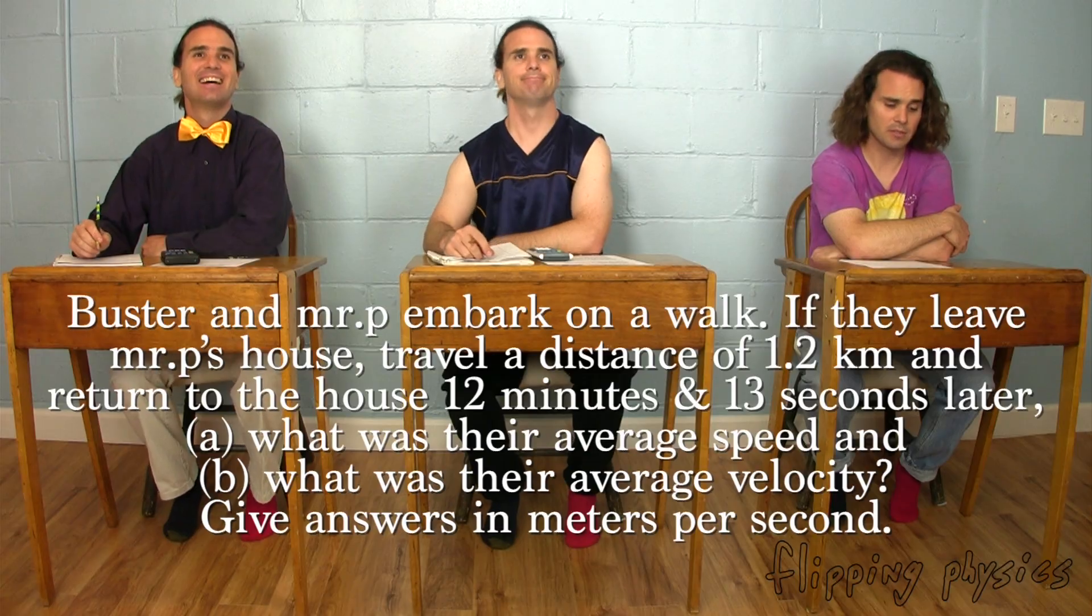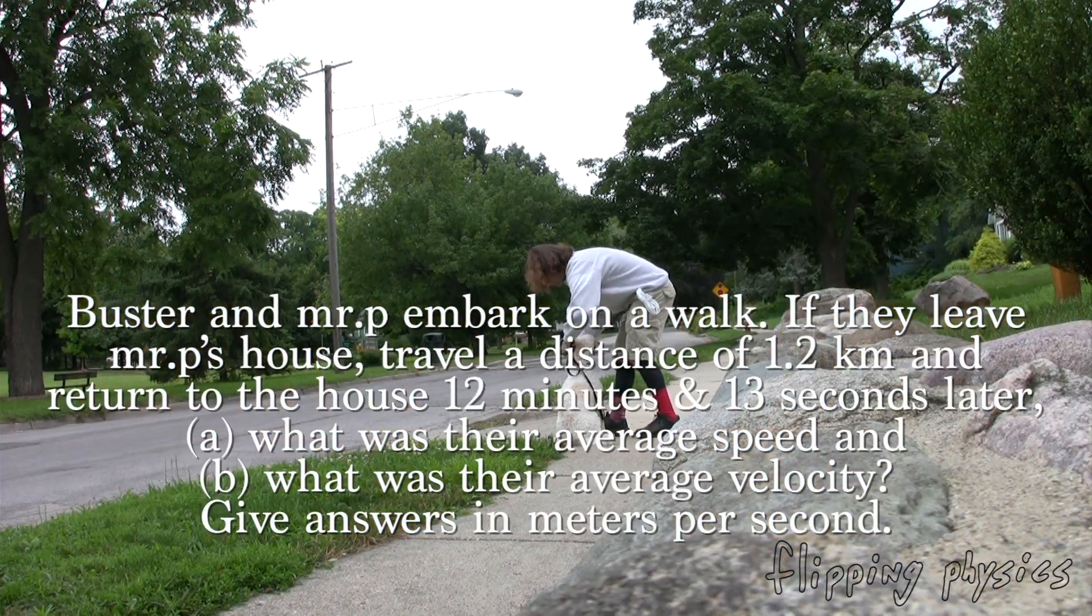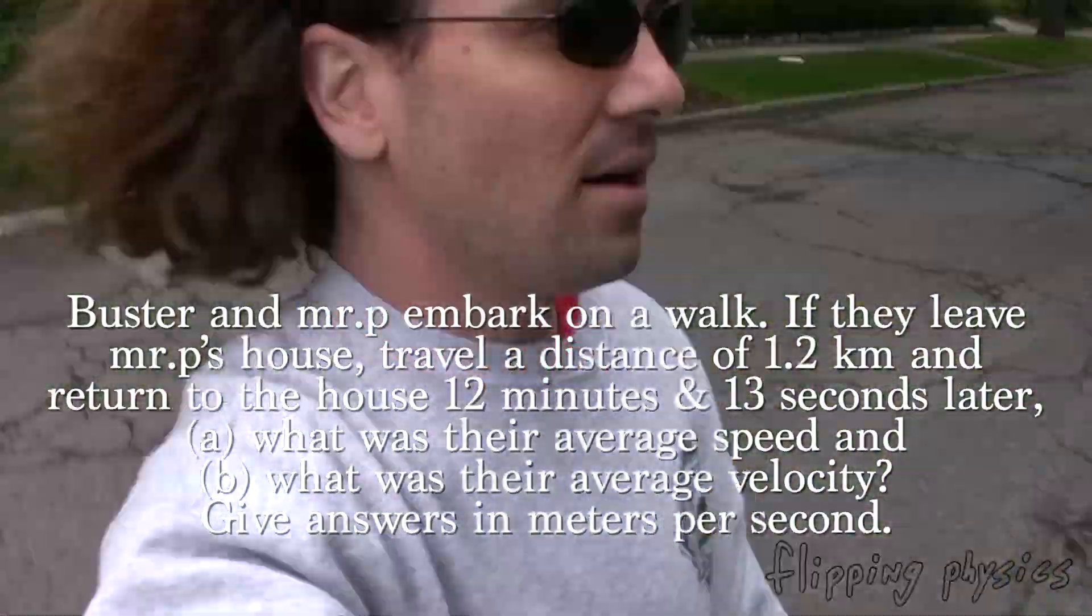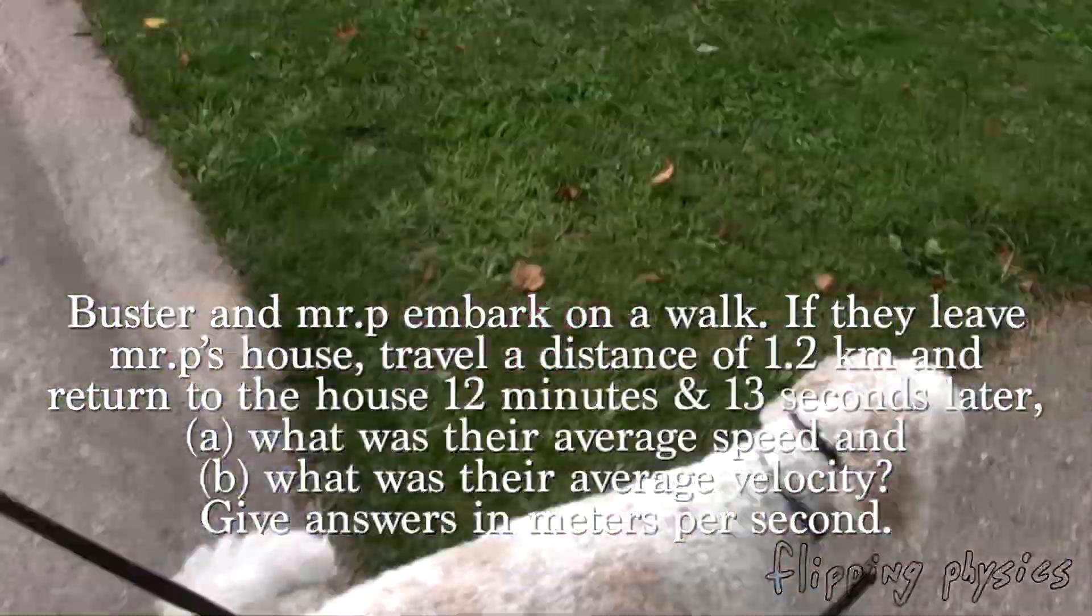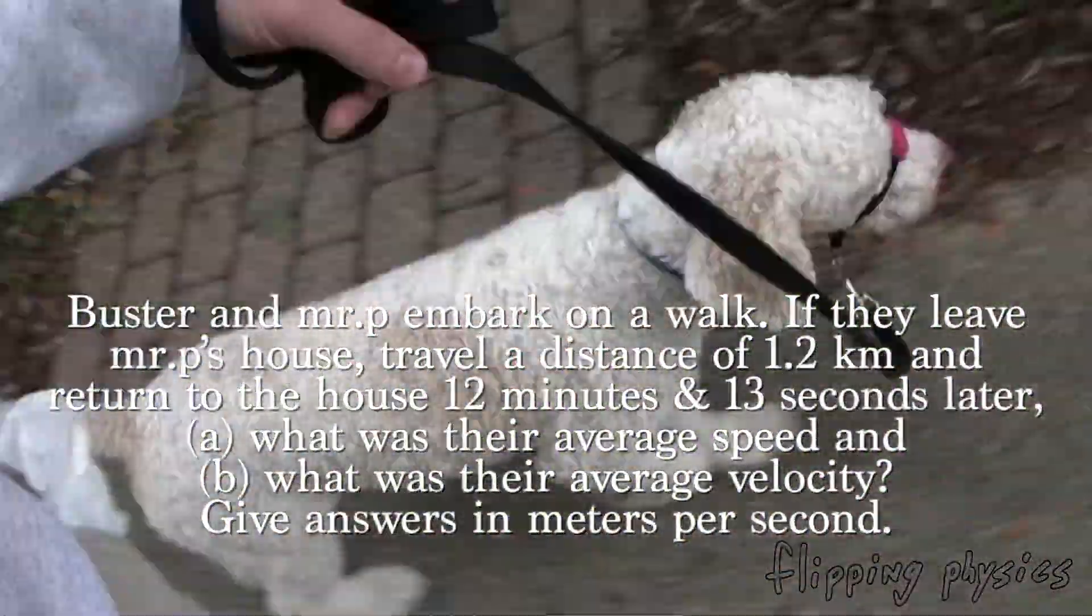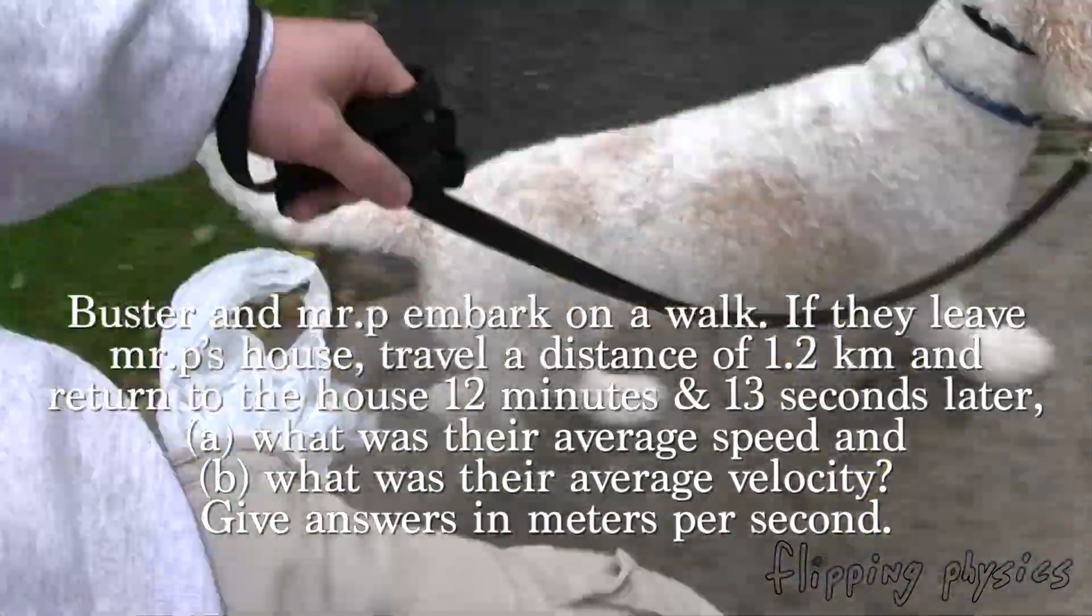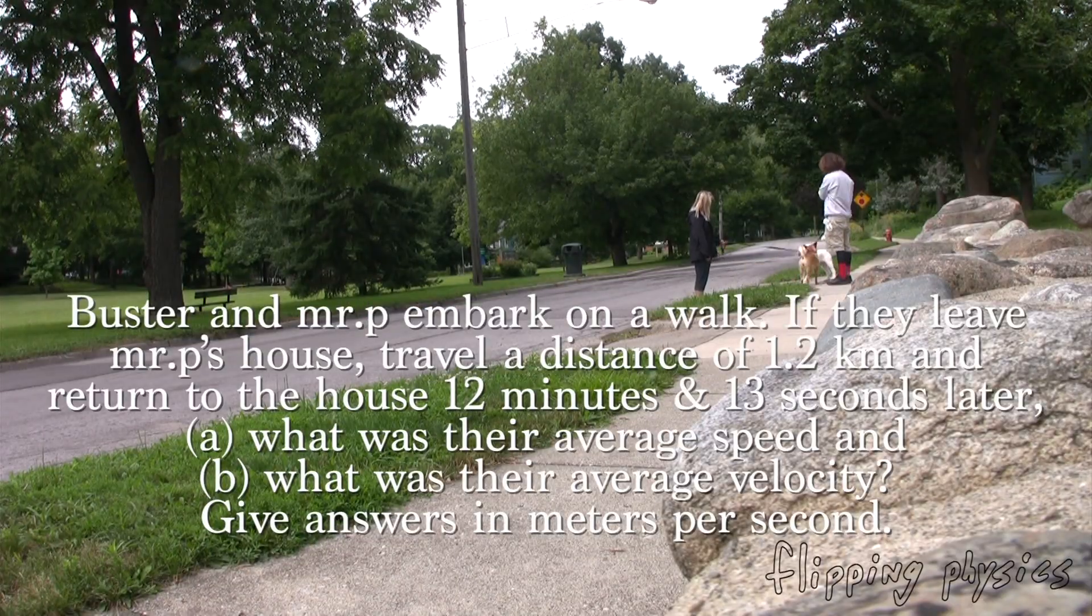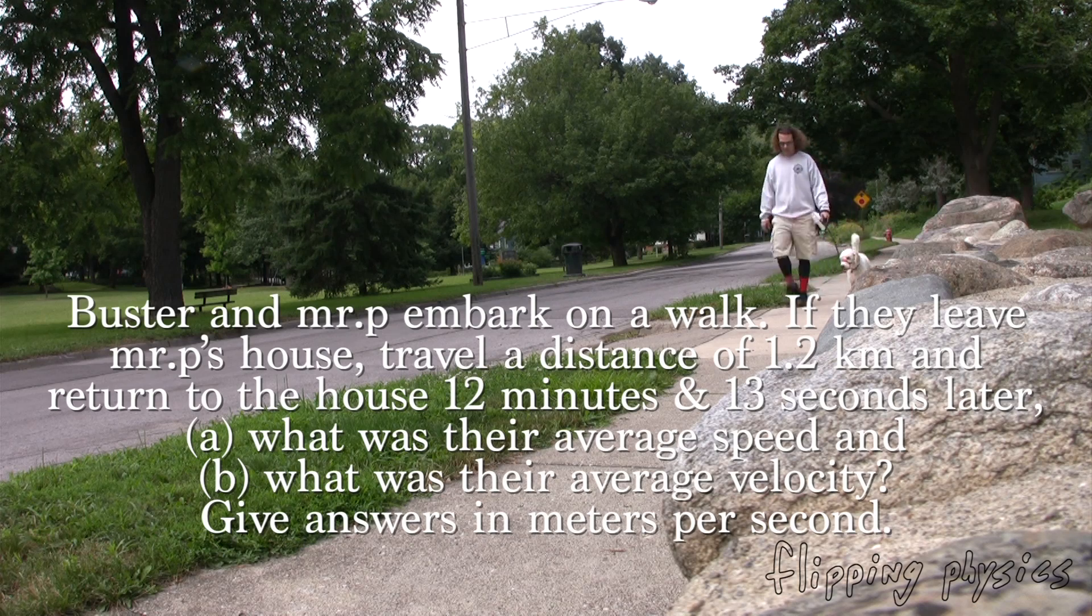Bo, please read the problem. Buster and Mr. P embark on a walk. If they leave Mr. P's house, travel a distance of 1.2 kilometers and return back to his house 12 minutes and 13 seconds later, A, what was their average speed and B, what was their average velocity. Give answers in meters per second.